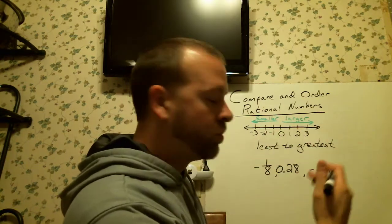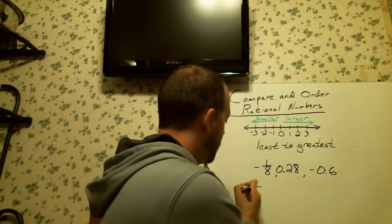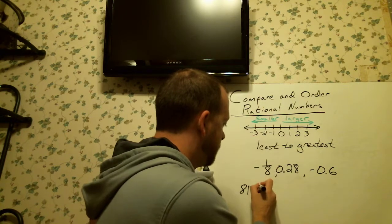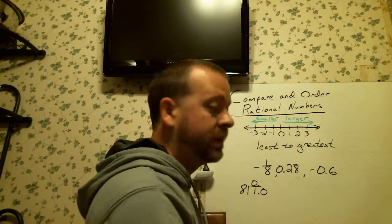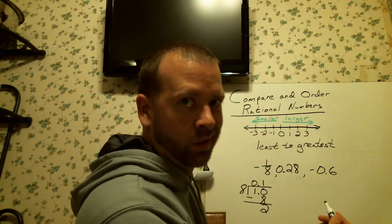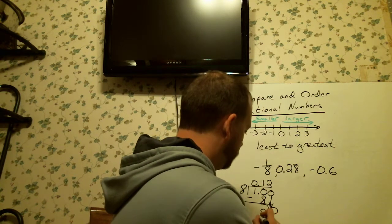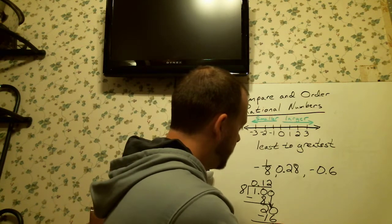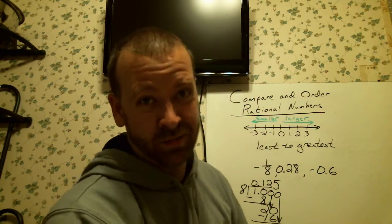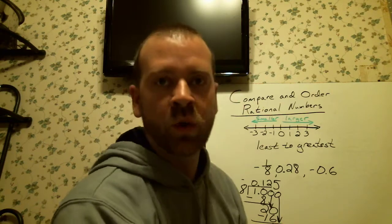The easiest way is to convert the fraction into a decimal. Take the numerator — the top number — and divide it by the denominator — the bottom number. Eight can't go into one, so we add a decimal, bring it up, and add a zero. Eight goes into ten one time. We don't like remainders in sixth grade, so bring down a zero. Eight goes into twenty two times. Remainder again — bring down a zero. Eight goes into forty five times. So negative one-eighth as a decimal is negative 0.125.